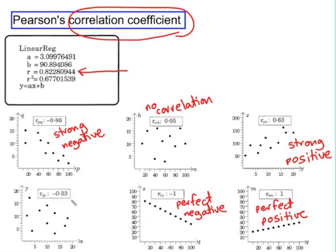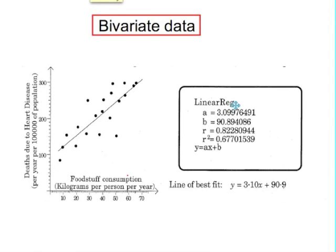An r-value between zero and negative 0.5 is weak negative correlation. So this example comes from the first page of this lesson, looking at the relationship between the amount of food people eat per year